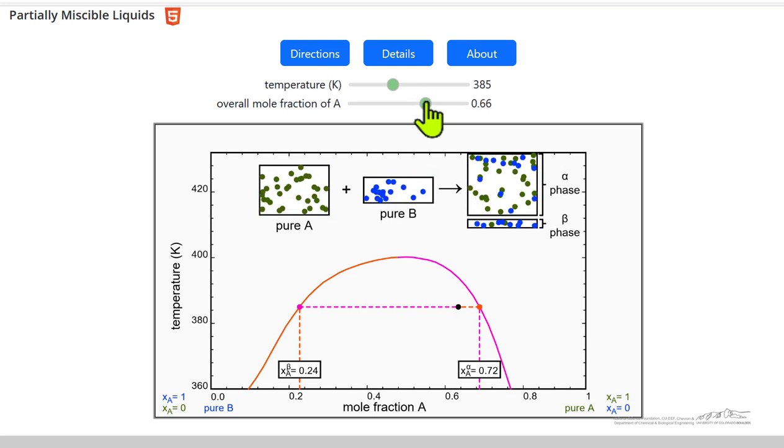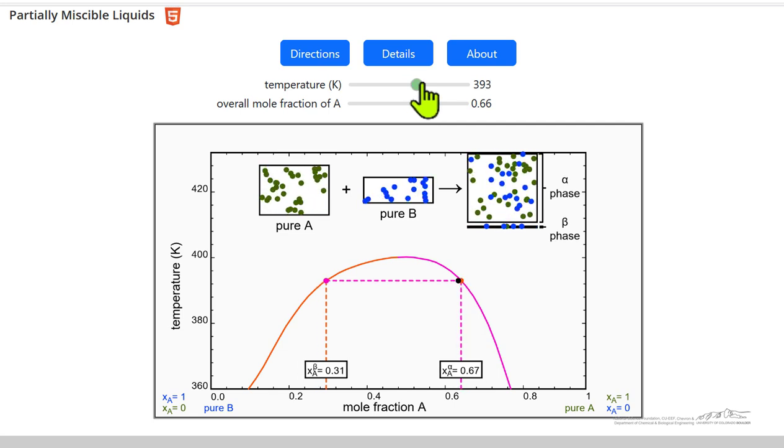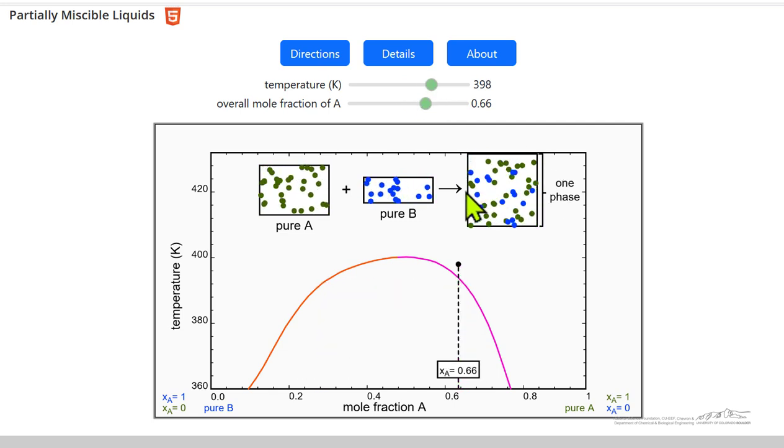And then I go the other way. Now the alpha phase is much larger. Beta phase is much smaller. If I raise the temperature,